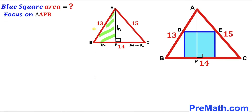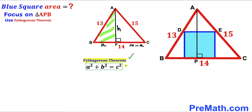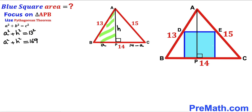Now let's focus on right triangle APB and apply the Pythagorean theorem. The Pythagorean theorem gives us a² + b² = c². In our case the hypotenuse is 13 and the two legs are lowercase a and lowercase H, so we get a² + H² = 13² = 169. Moving a² to the other side: H² = 169 − a². I'll label this as equation 1.